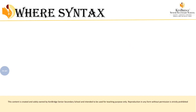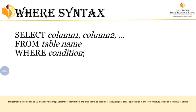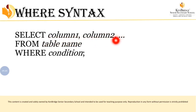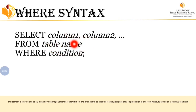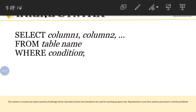Let's see the syntax of the WHERE clause. The syntax is: SELECT column1, column2 FROM table_name WHERE condition. Column1 and column2 refer to your column headers — for example, if it is a student table, you can write SELECT StudentID and StudentName. You mention whichever table you are dealing with as the table name, and at the end you apply the condition.